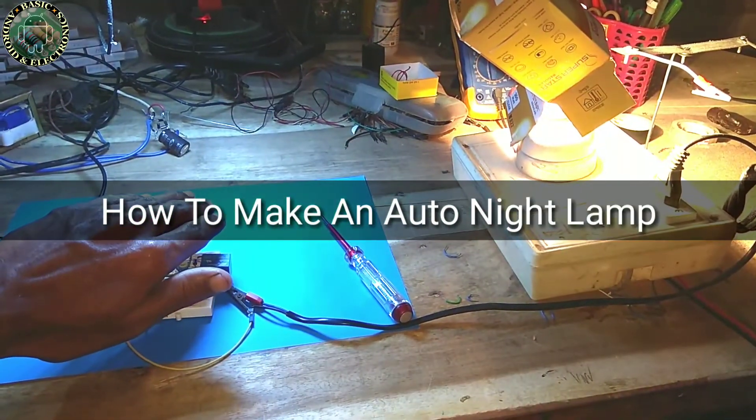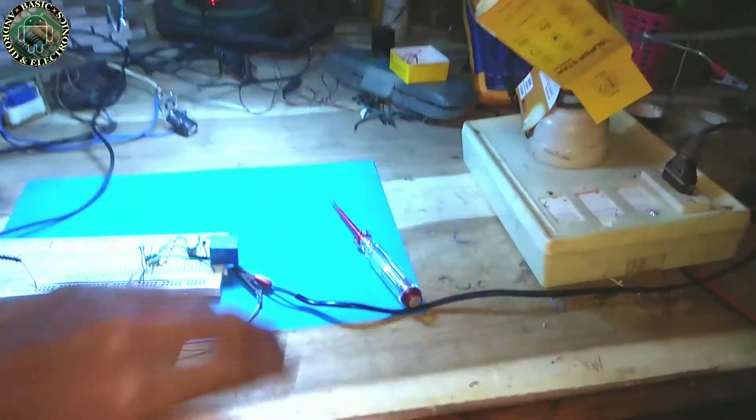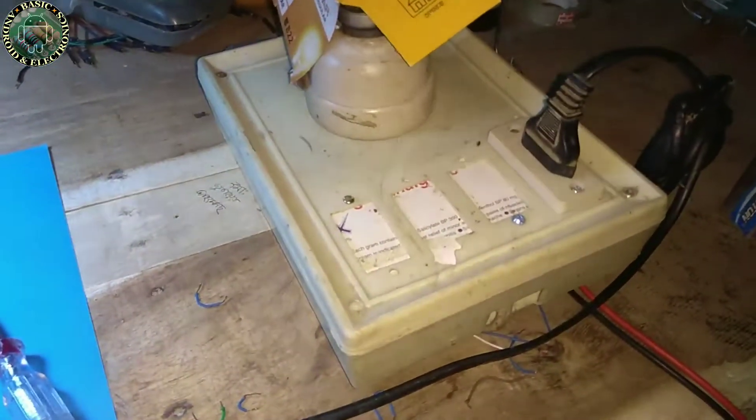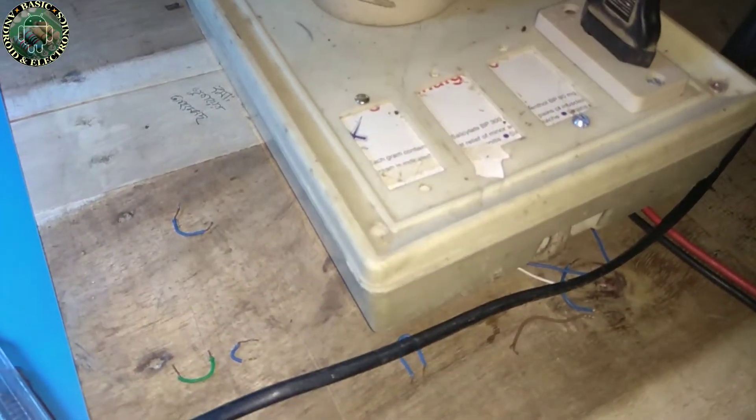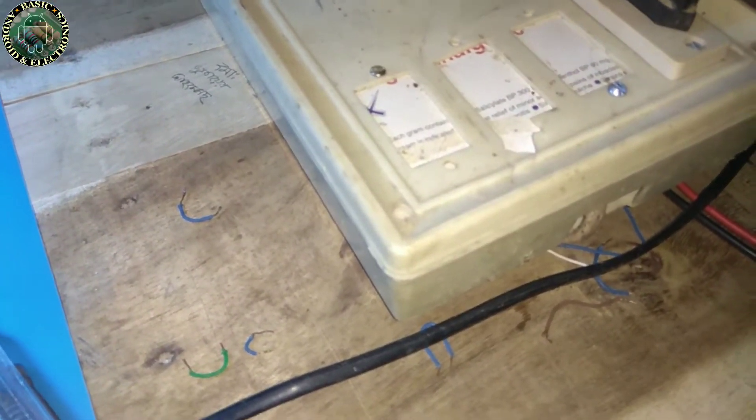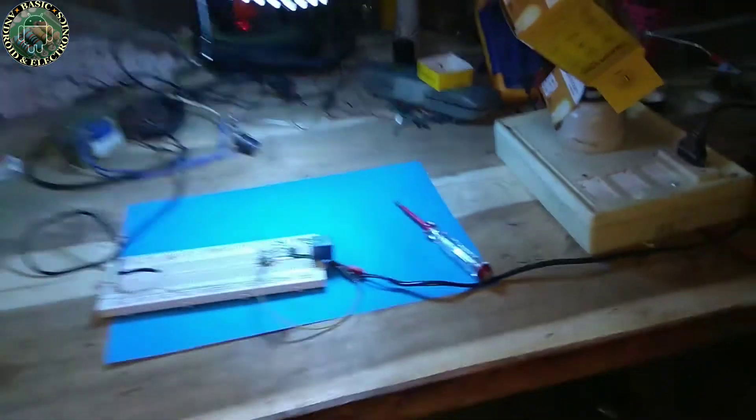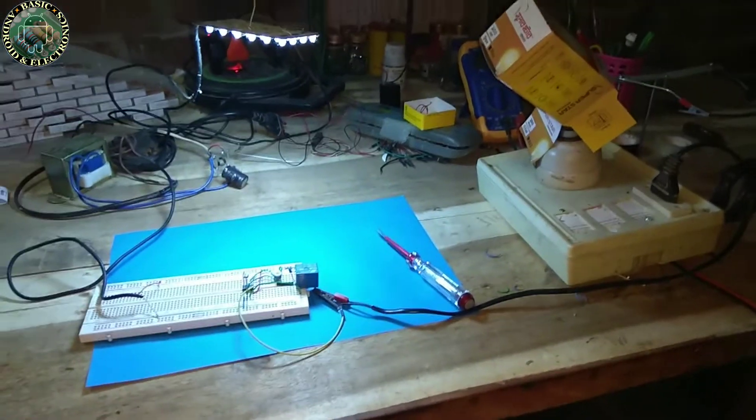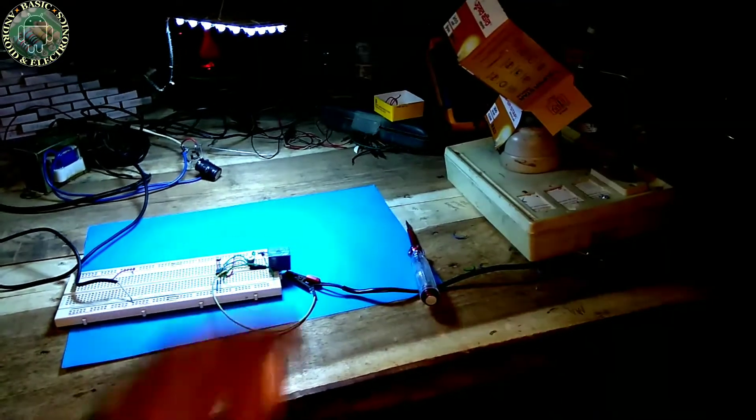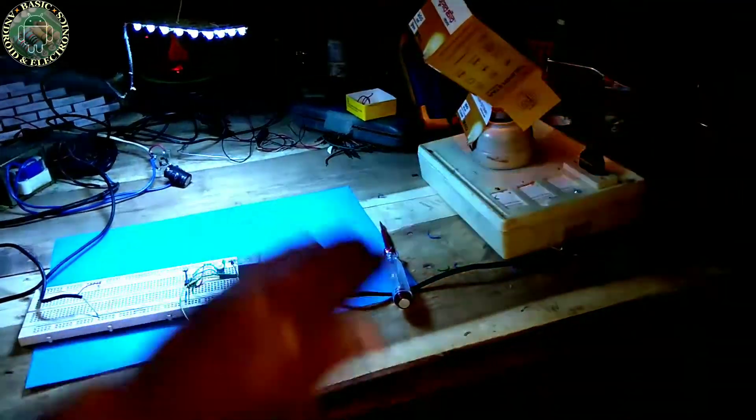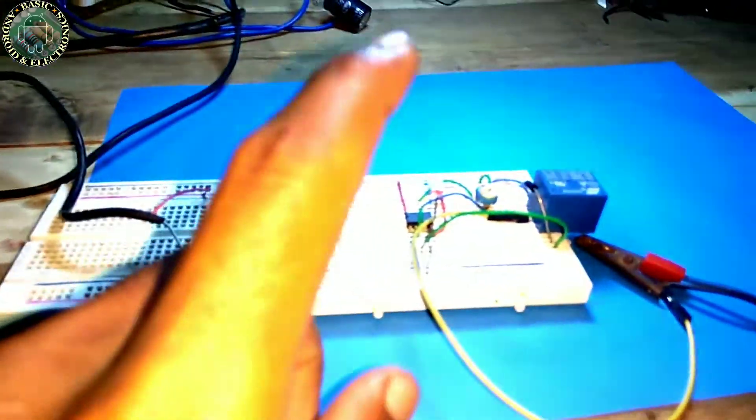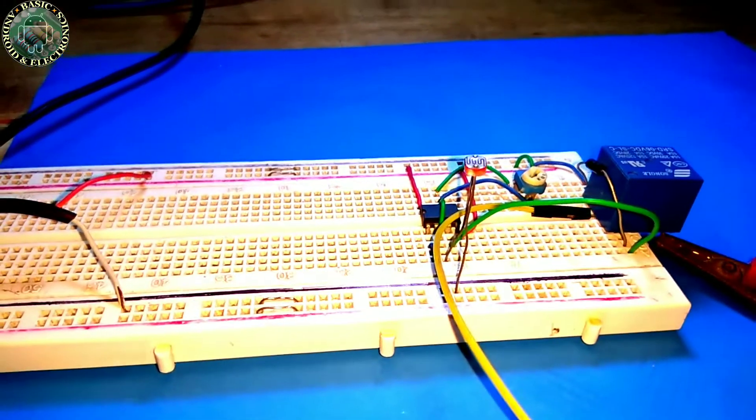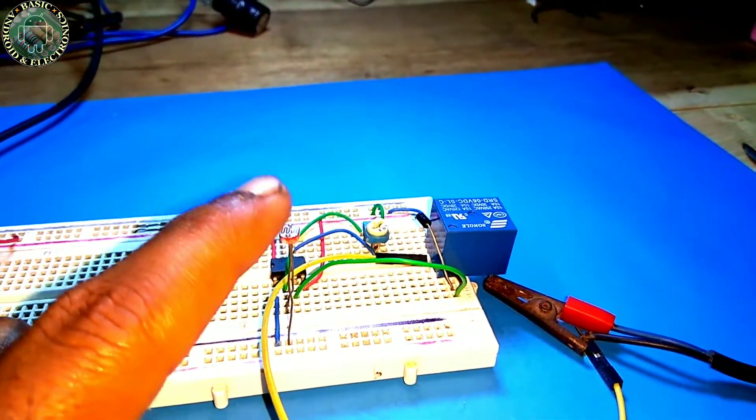Automatic night lamp, as the name suggests, is for turning on and off the lamp automatically without the need of human intervention. It senses the light intensity from surroundings and finds whether it's day or night. It automatically turns on when the surrounding is dark and turns off when it receives light from surroundings.